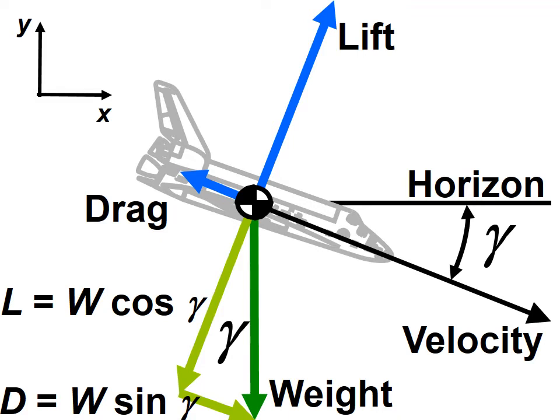Therefore, we conclude that the component of weight parallel to the velocity vector must be exactly equal to and opposite in direction from the drag. Likewise, the component of weight perpendicular to the velocity vector must be exactly equal to and opposite in direction from the lift.